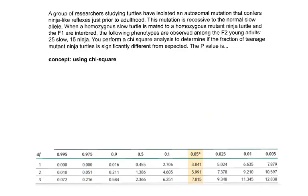A group of researchers studying turtles have isolated an autosomal mutation that confers ninja-like reflexes just prior to adulthood. This mutation is recessive to the normal slow allele. So whenever I see that, I'm going to write down my mutation. Let's call it nin for ninja, and it's recessive to the normal allele.